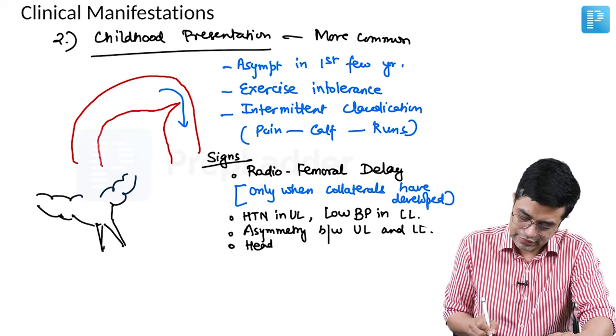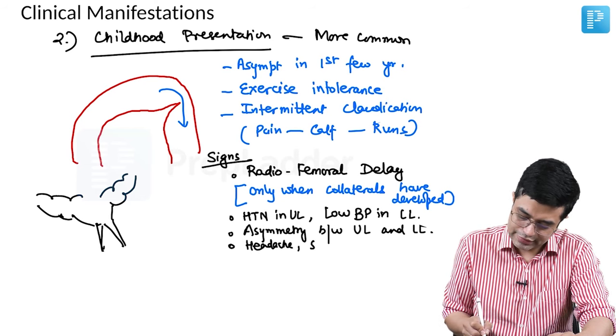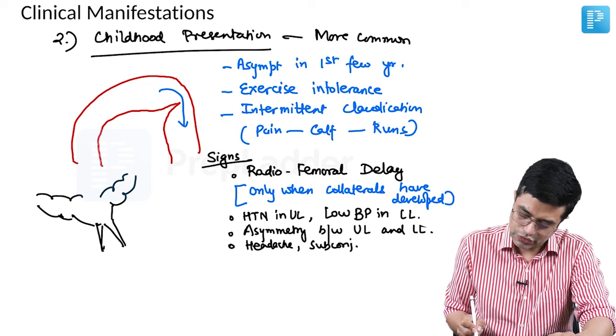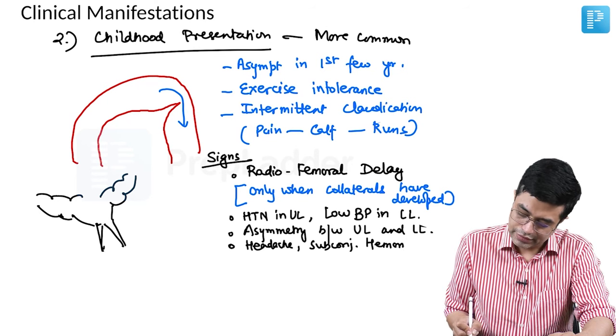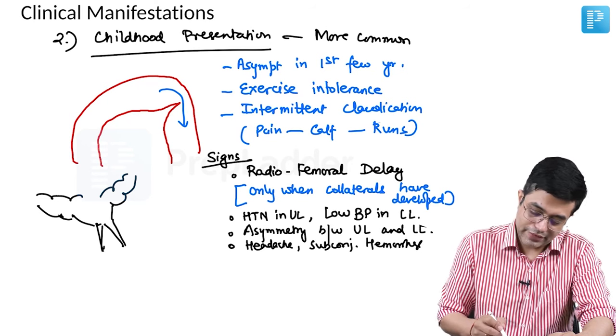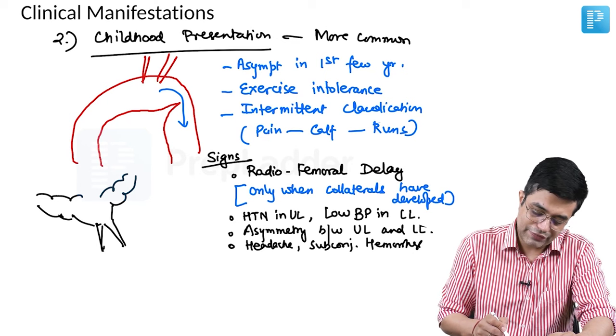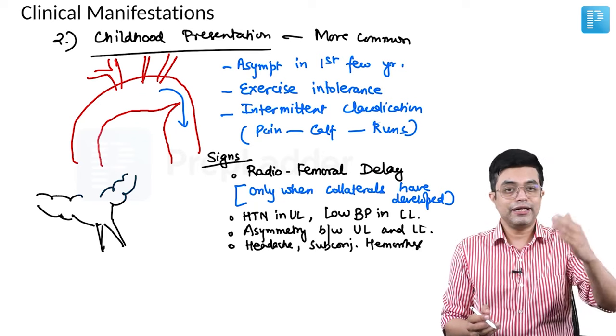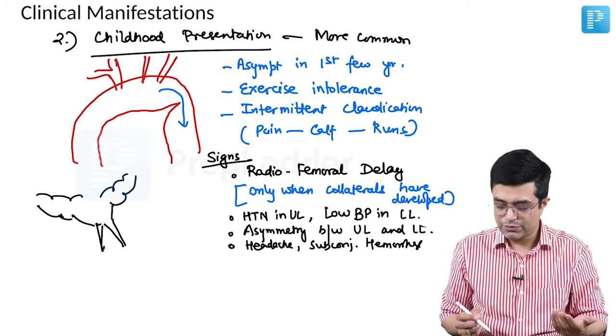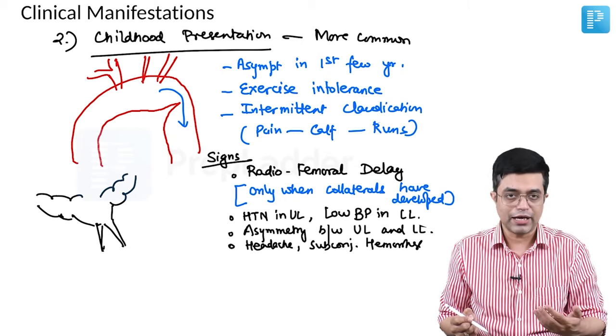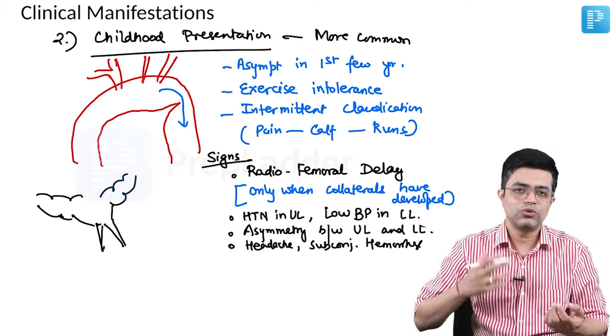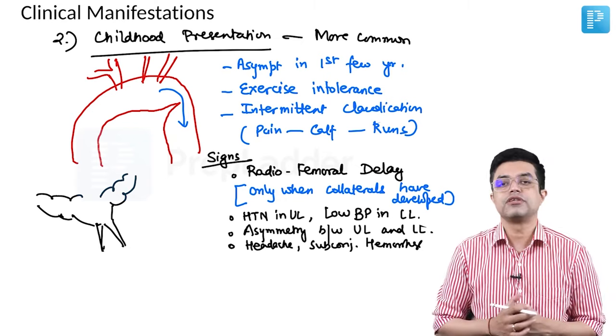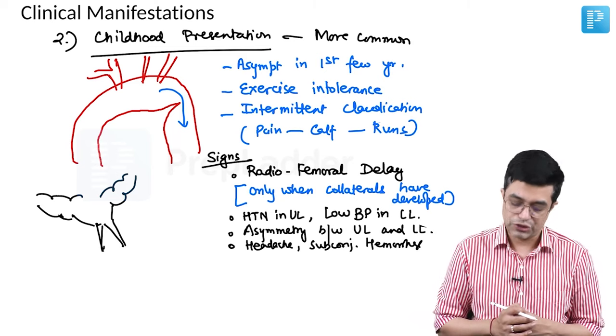You will also find that these patients have episodes of headache as well as subconjunctival hemorrhage. Why is it so? See, all the carotids and subclavian artery vessels are arising proximal to the narrowing. So blood supply in them is chronically increased. So there will be periods of headache, subconjunctival hemorrhage. They can also be related to the persistent hypertension which tends to develop in most of these patients.